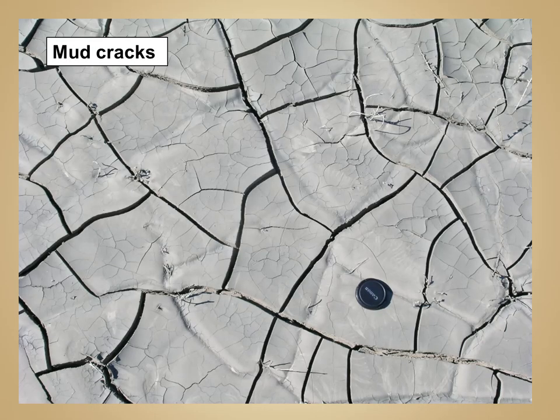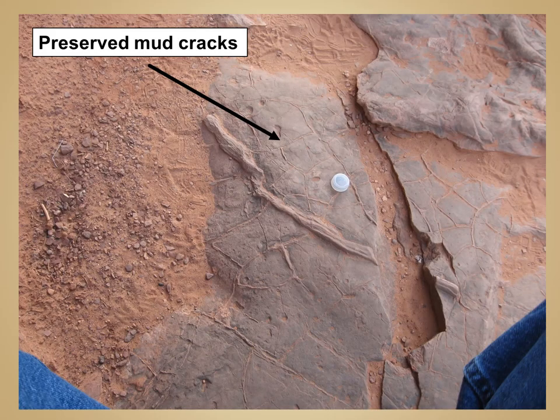Another type of sedimentary structure that forms on the surface of bedding planes is known as mud cracks. Mud cracks form in sediment that is rich in clay. Typically these clays are deposited when wet — at the bottom of a lake, in a flood plain, or in a deep marine environment — and then are exposed to the air and dry. As these sediments dry, the clay shrinks and cracks in polygonal patterns. This mud can then lithify to form shale, where these mud cracks are preserved, as seen in this photograph.